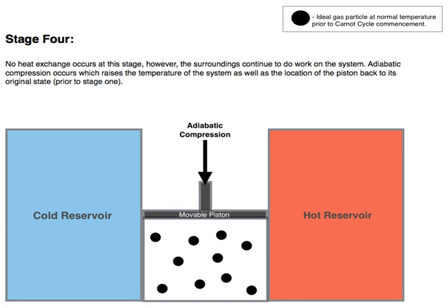Carnot's theorem: It can be seen from the above diagram that for any cycle operating between temperatures TH and TC, none can exceed the efficiency of a Carnot cycle. Carnot's theorem is a formal statement of this fact: no engine operating between two heat reservoirs can be more efficient than a Carnot engine operating between those same reservoirs.